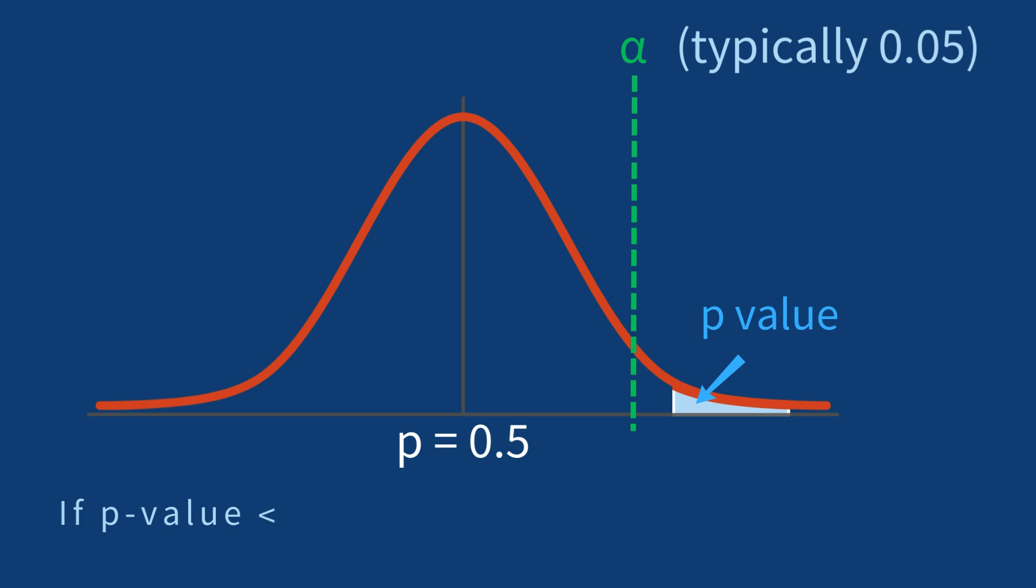If your calculated p-value falls below this chosen significance level, you reject the null hypothesis that your result is just due to chance. You can then conclude that your observed result is statistically significant at the chosen alpha level.